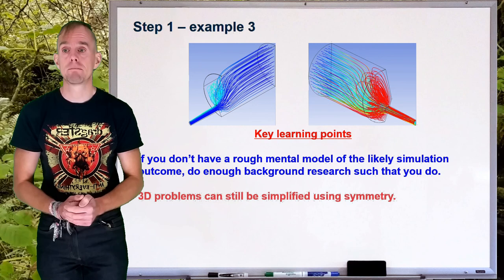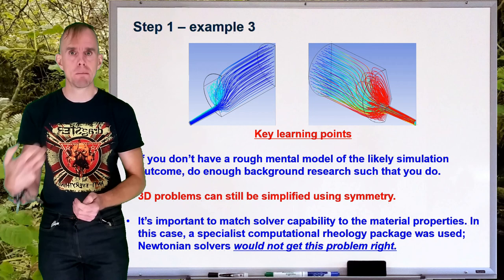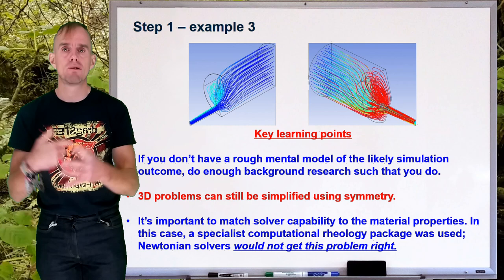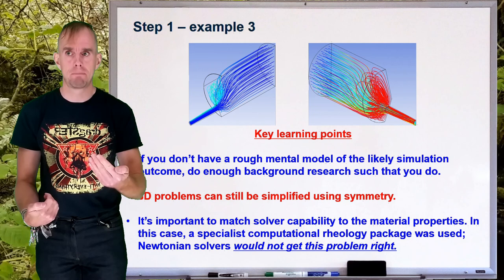Don't forget, if you've got a 3D problem, you can still incorporate planes of symmetry to simplify it. And the other really important thing, it's really important to match the solver's capability to the material properties within your simulation. In this case, if we were using a Newtonian solver to try and work out what the flow pattern in the viscoelastic liquid is, we would have got the completely wrong answer. So, be careful. Match capability to problem.